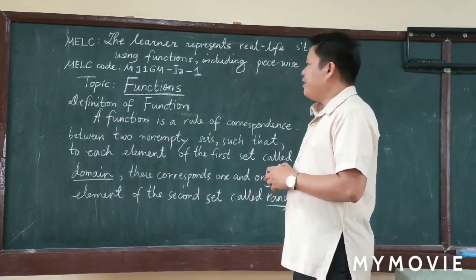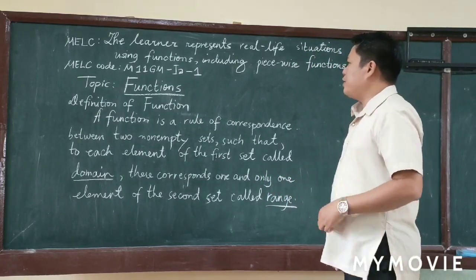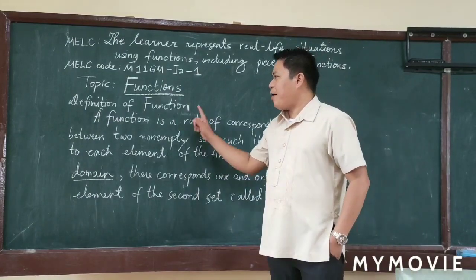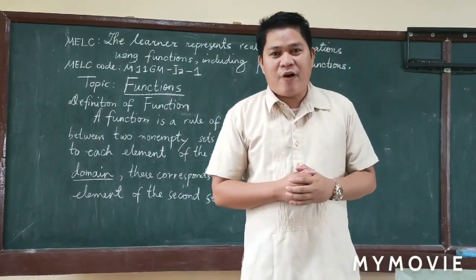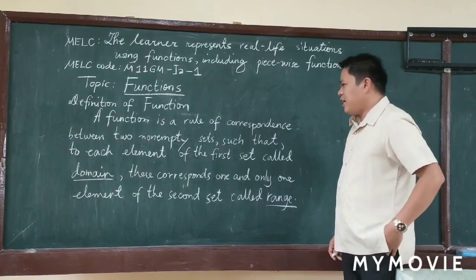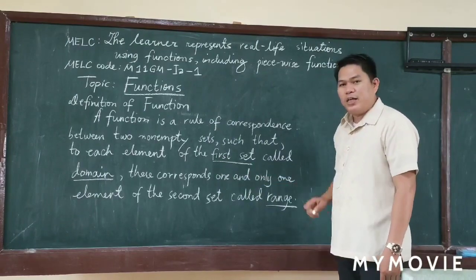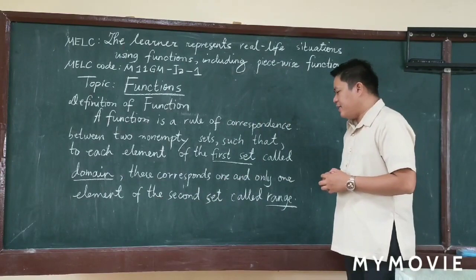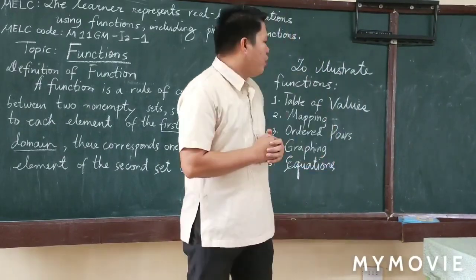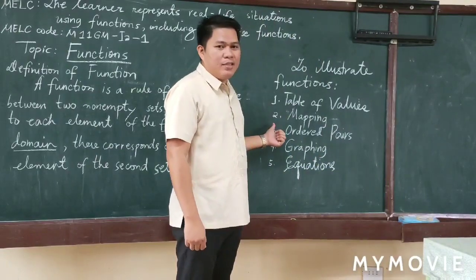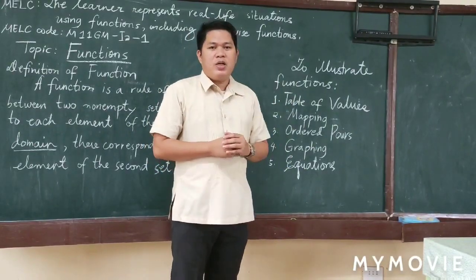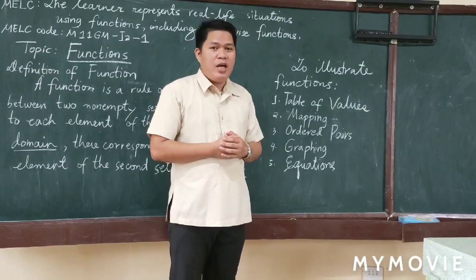The first MELC is: the learner represents real life situations using functions, including piecewise functions. So our topic is all about functions. A function is a rule of correspondence between two non-empty sets such that each element of the first set, called the domain, corresponds to one and only one element of the second set, called the range. To illustrate functions, there are five ways: table of values, mapping, ordered pairs, graphing, and equations.